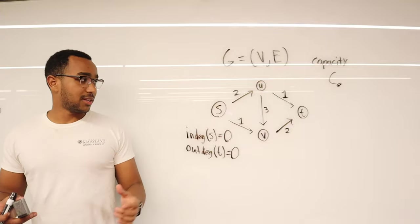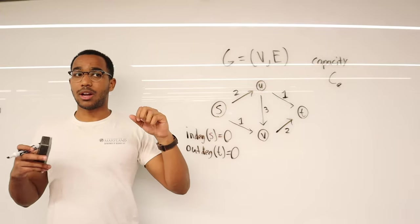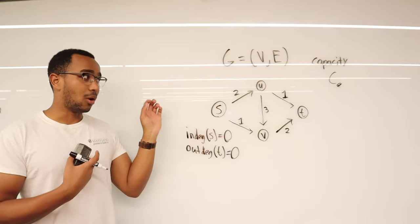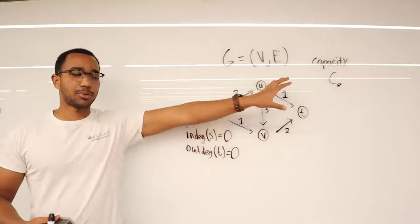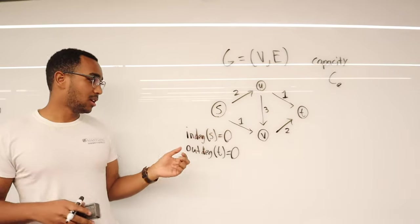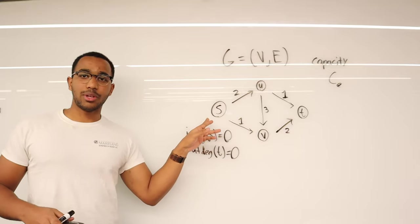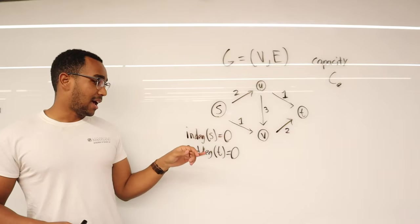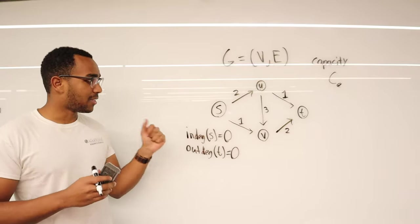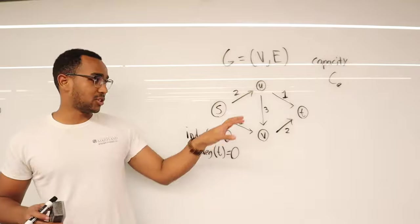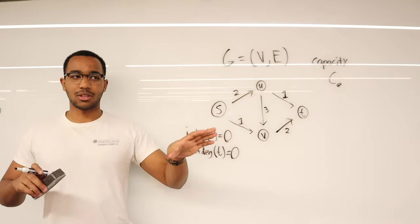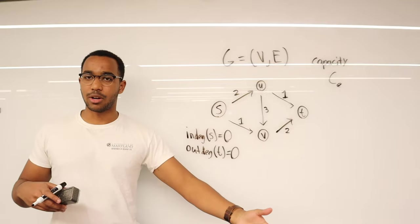Flow networks are all about edges being like pipes, and our goal is to drive as much water through these pipes as possible. The best way to visualize this is to imagine these are pipes instead of edges — though this gets confusing when we get to the next part I'll show you.